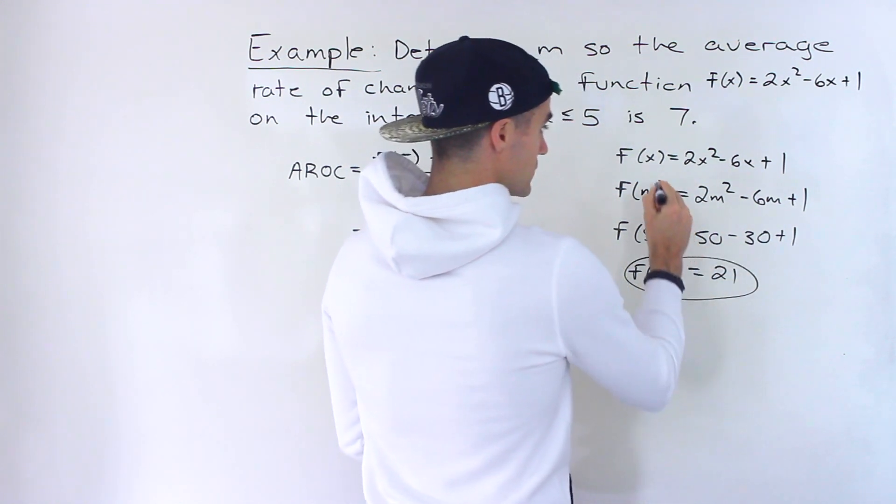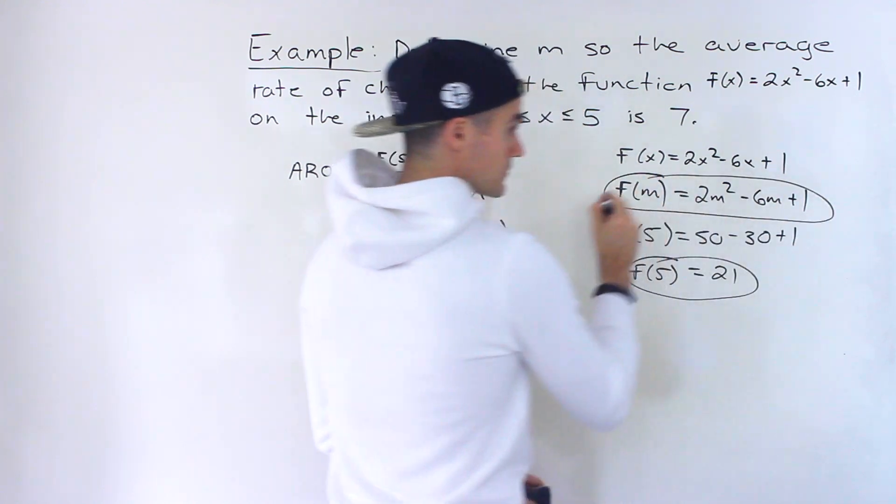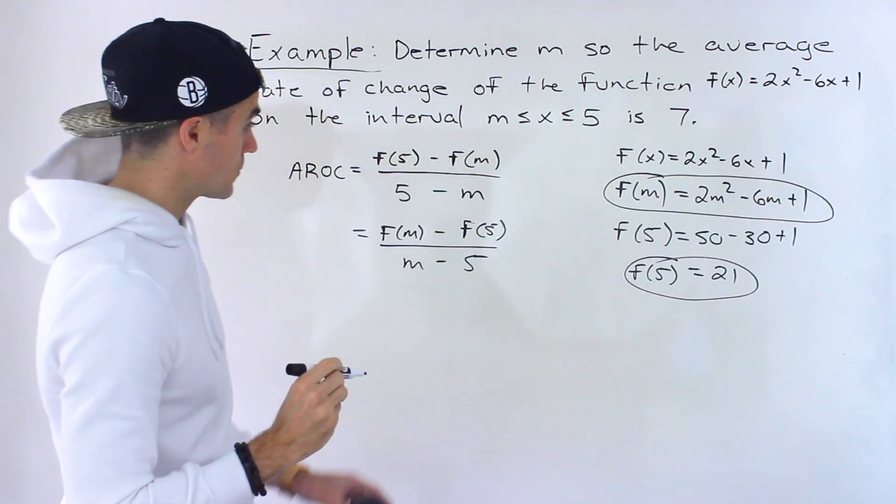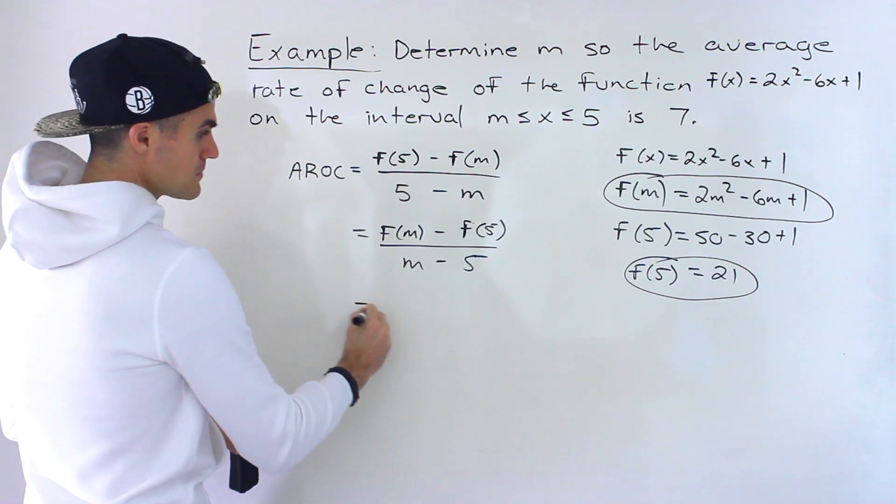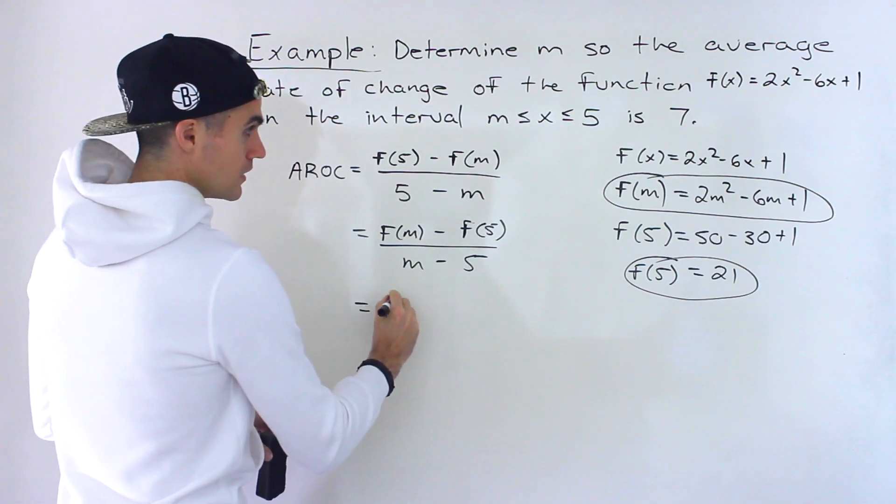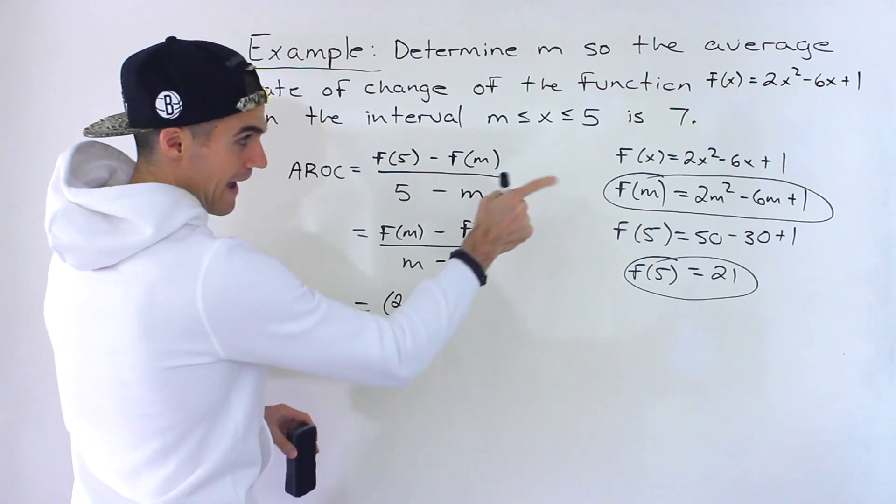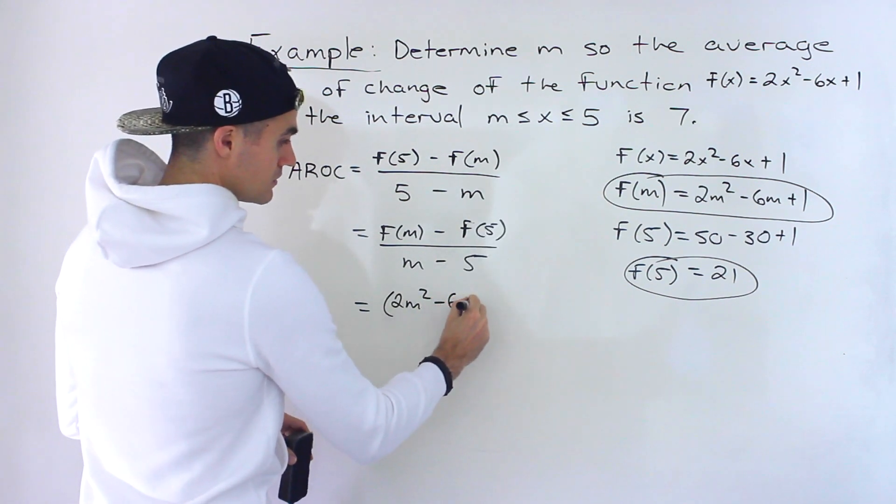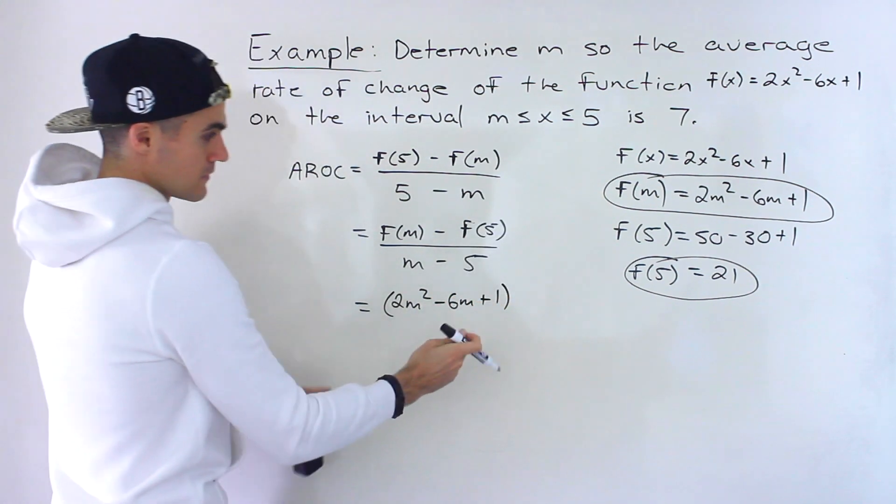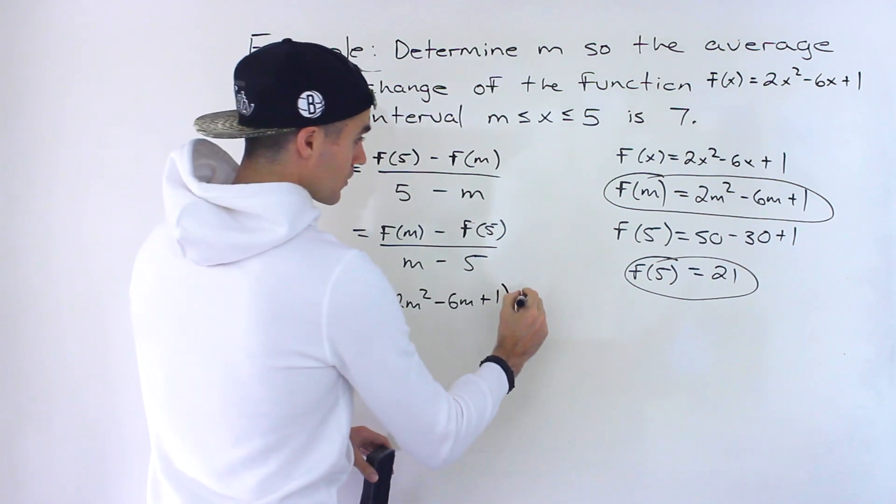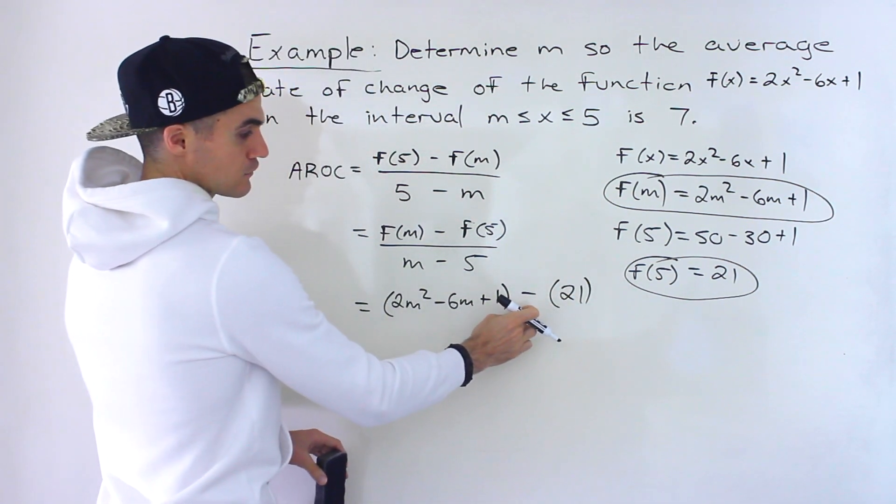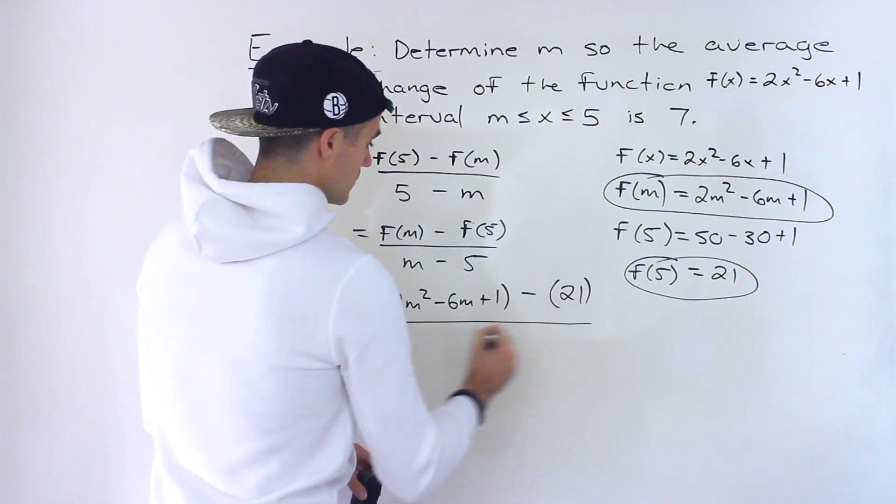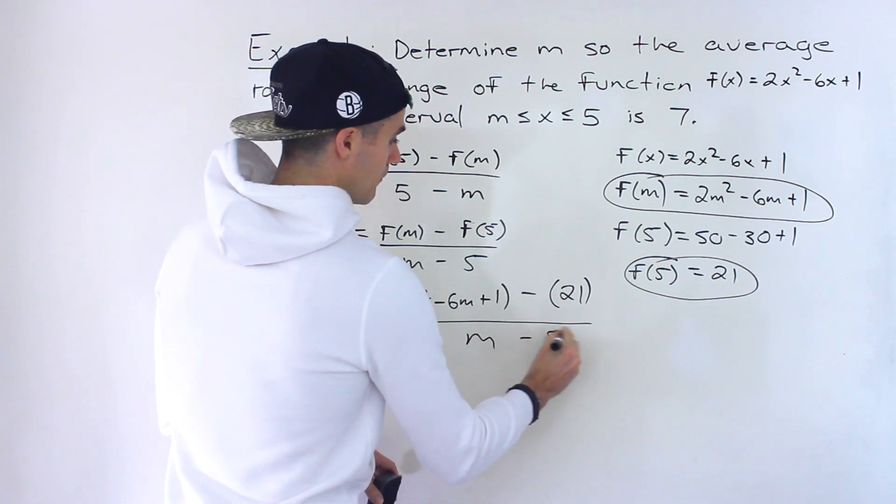So we have f(5) = 21 and f(m) = 2m² - 6m + 1. So the reason I prefer to use this one over here is because when we set it up, that whole expression for f(m), we don't have to worry about distributing a negative. And then this is going to be all over m - 5.